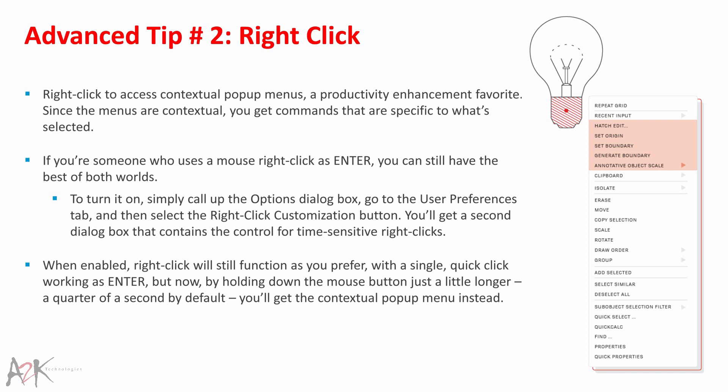You'll get a second dialog box with the control for time-sensitive right-clicks. When enabled, a single quick-click still functions as Enter, but by holding down the mouse button just a little longer — a quarter of a second by default — you'll get the contextual pop-up menu instead.